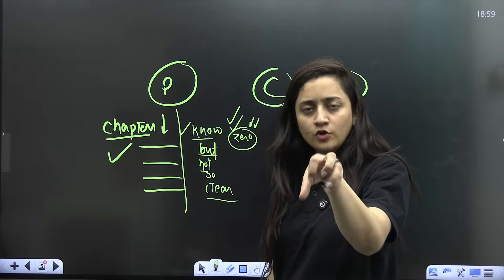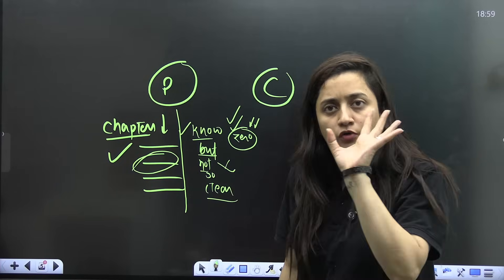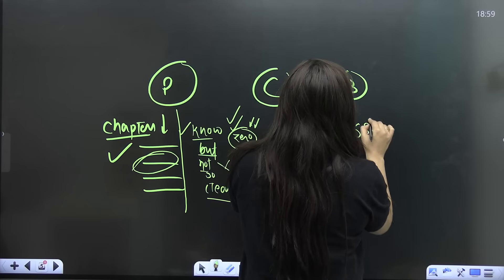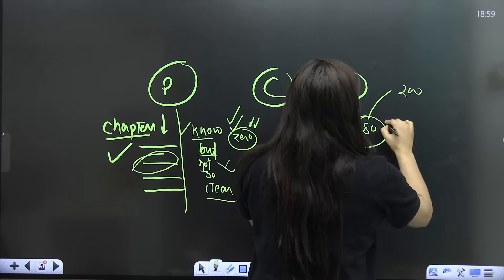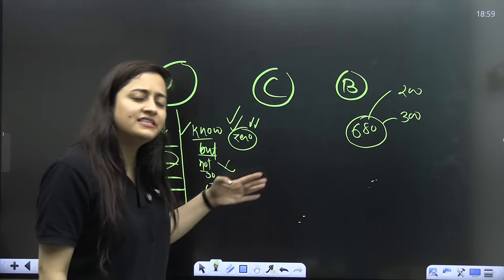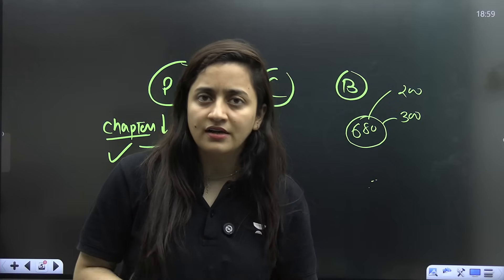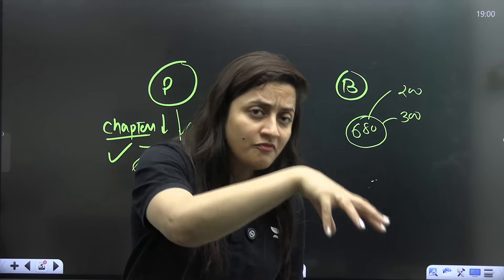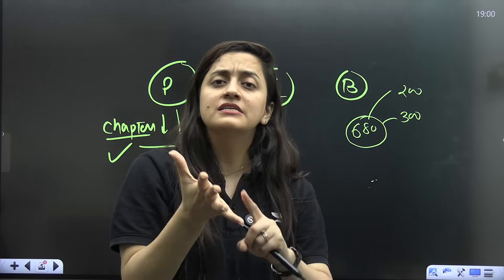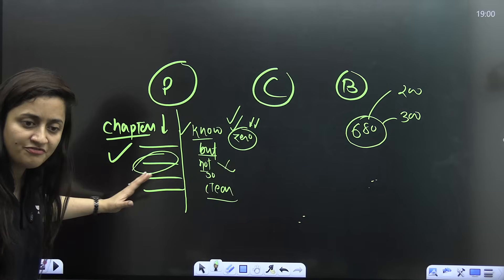When you do this practice, you'll know where you're weak and where you're not. You'll get an idea — if your minimum score is 680, you might currently be at 200 or 300 marks. If you're a dropper, you know which chapters are important and which aren't. If you don't know, you can watch the chapter importance list on this channel — I have videos for physics, chemistry, and biology.